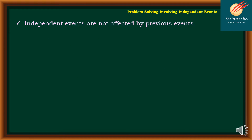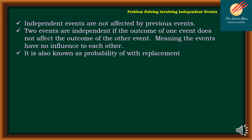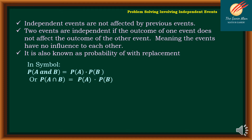Whenever we say independent events, events are not affected by the previous events. Two events are independent if the outcome of one event does not affect the outcome of the other event, meaning the events have no influence on each other. It is also known as the probability with replacement. In symbol, the probability of A and B is equal to the probability of A times the probability of B, or P(A ∩ B) = P(A) × P(B).